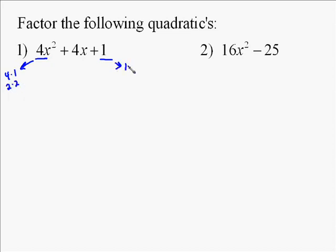Well, four factors into four times one and four factors to two times two. And one factors to one times one. Well, the great thing is it's only option for one, and since it's a positive one, we either have to have two positive ones or two negative ones.